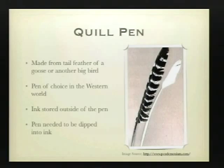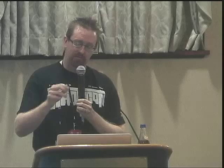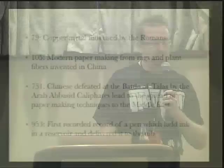Ink was stored inside the pen — you dip it in. Also called dipping pens. 79 AD: a big invention came through. We started to see evidence of copper metal nibs being used in Rome. Actually, in the ruins of Pompeii, they found copper metal nibs, which is the first case of moving away from quill-based or reed-based pens over to using metal. You used copper to form the nib of the pen, which is the part that writes.